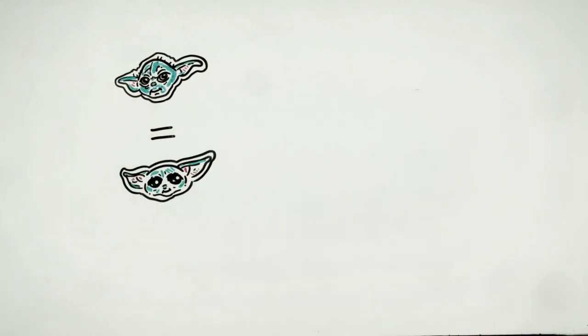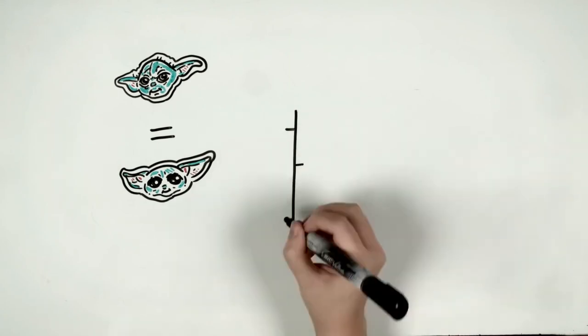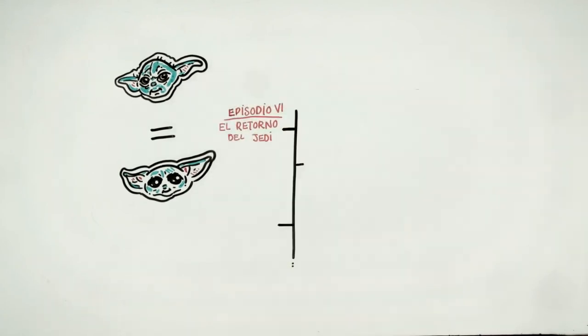Another theory suggests that Baby Yoda is actually the same Yoda when he was a baby. That in that case, the chronology of Star Wars would not fit correctly, and the series will not be able to be between episodes 6 and 7.